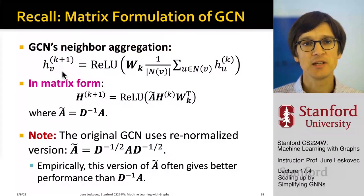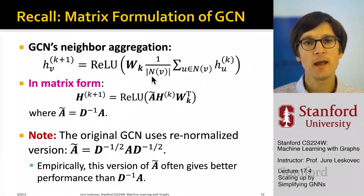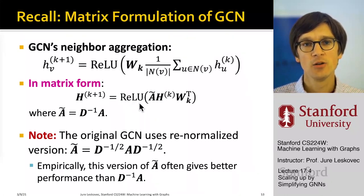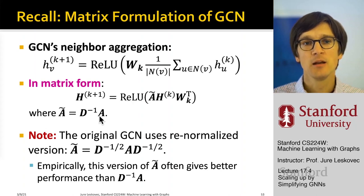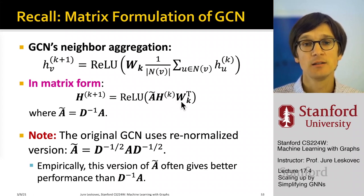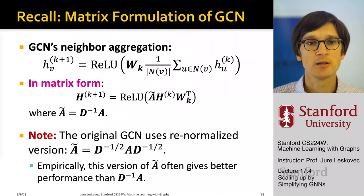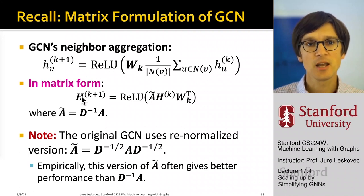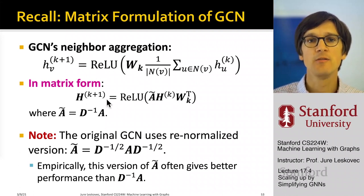Going back to the GCN, here is the node-based formulation of the GCN. If you write it in matrix form, you can write it as a non-linearity applied to A-tilde — which is D inverse times A — times the previous layer embeddings times the transformation matrix W. This node-based equation and the matrix equation are equivalent. If you compute this product of matrices, you have computed the k+1 layer embedding for all nodes, and you can iterate this K times to compute K layers.